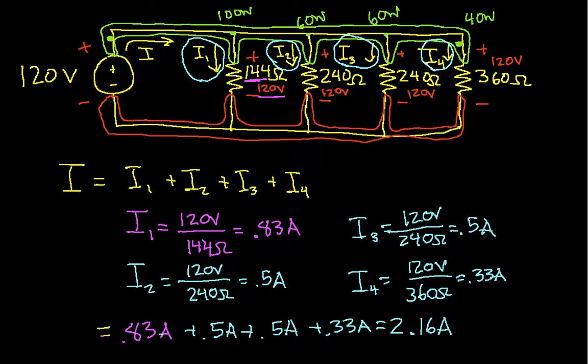The current will depend on the value of the resistor. So that's why I1 is the largest, because the resistance, 144 ohms, is the smallest. That's why I4 is the smallest, because it has the largest resistance.